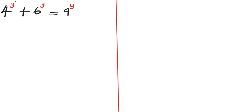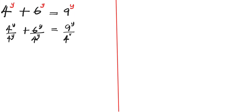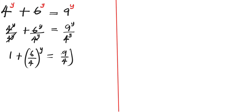In order to solve this exponential equation, the first step is for us to divide all through by 4^y. So we're going to have 4^y divided by 4^y, plus 6^y divided by 4^y, equals 9^y divided by 4^y. This will cancel, so we're going to have 1 plus (6/4)^y equals (9/4)^y.